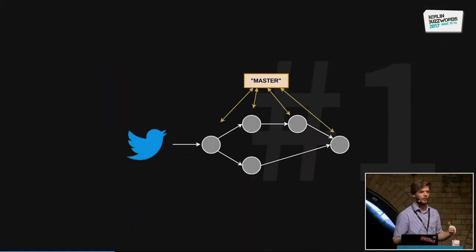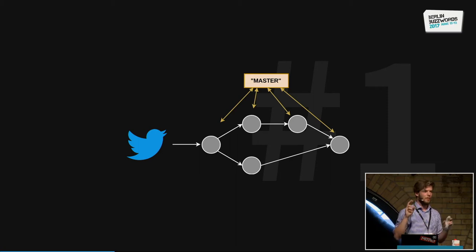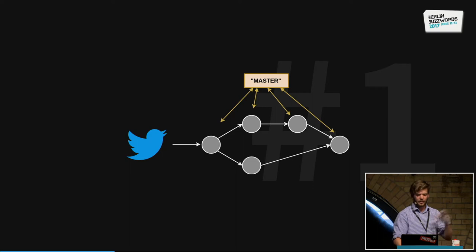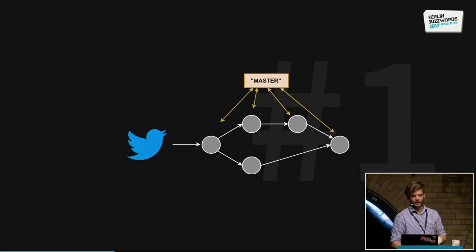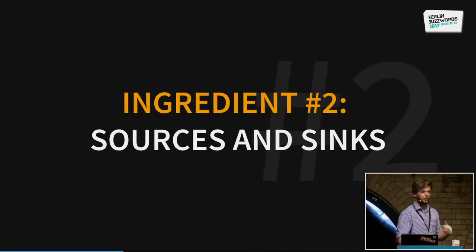So what we have now is an application that looks like this: we have Twitter, and then we have our topology with nodes where the processing is happening. All of them will have one master node that takes care of all the management — in Flink that's a job manager, in Spark it's called a master. But the idea is generally the same.